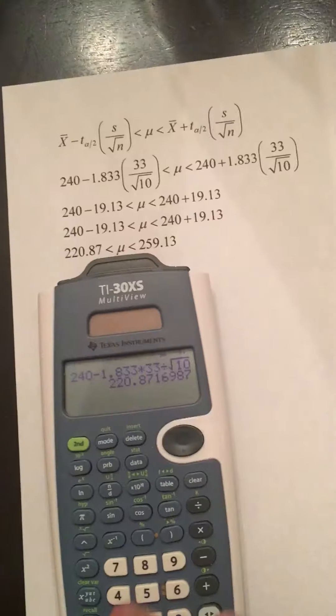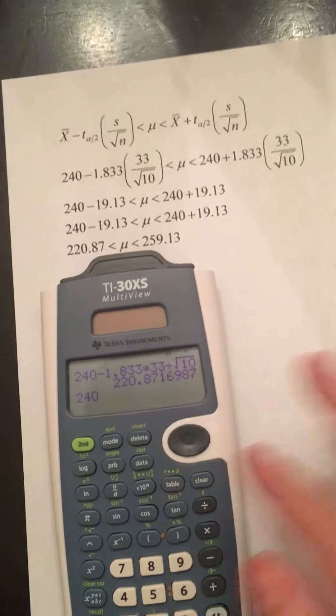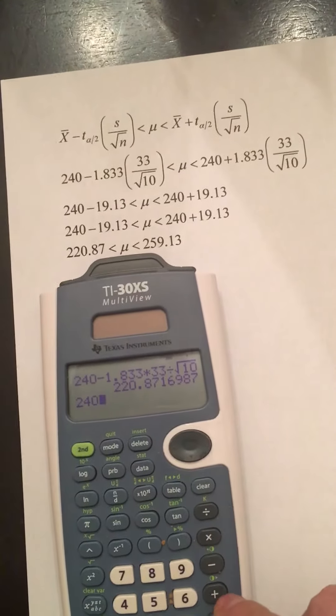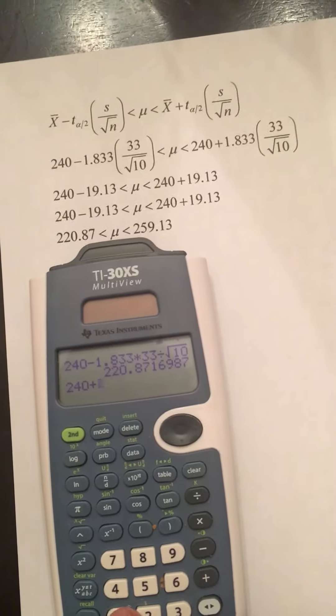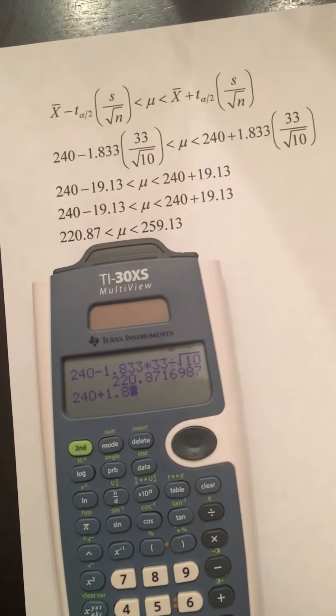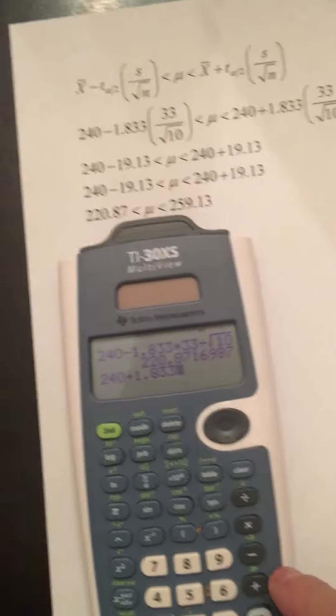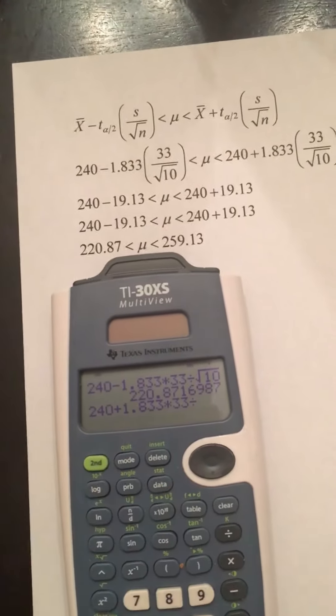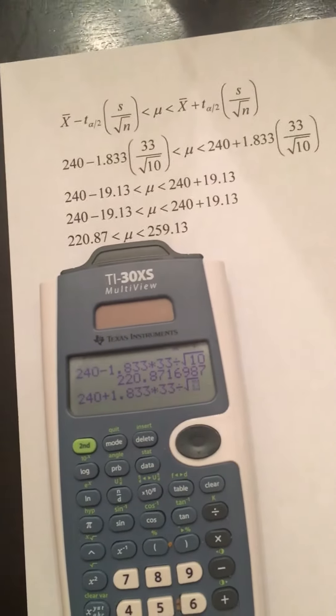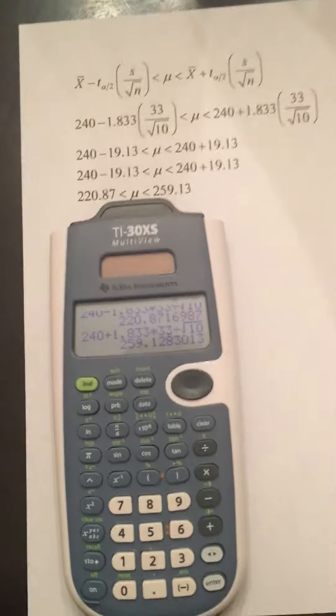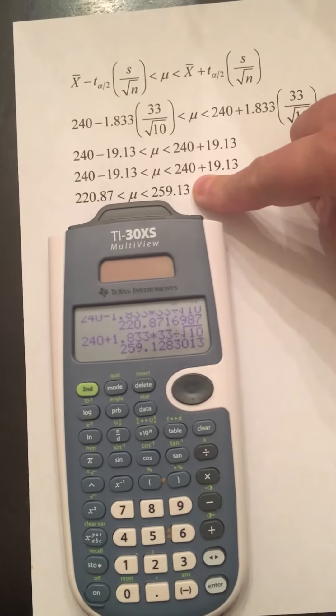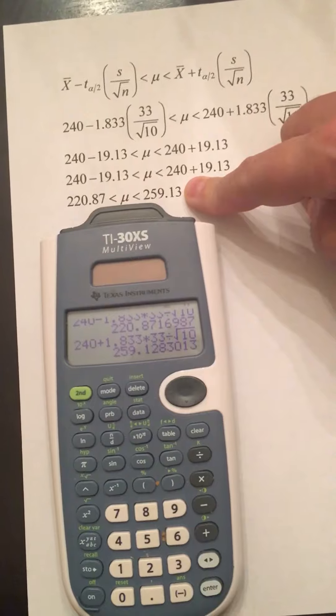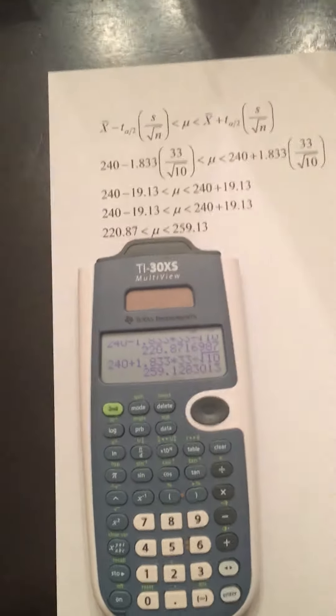To get the right endpoint, we just type in everything nearly the same, except we use a plus, 1.833 times 33 divided by second, square root, 10. Hit enter, and we have our second endpoint, 0.259. If we round it to two places, 0.13.